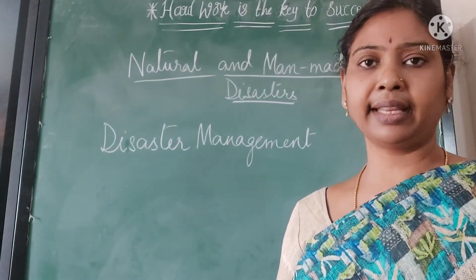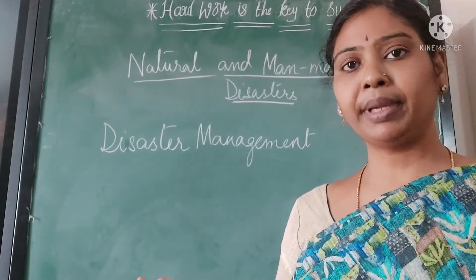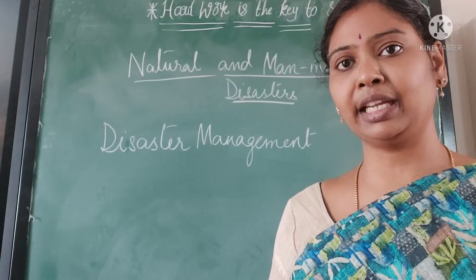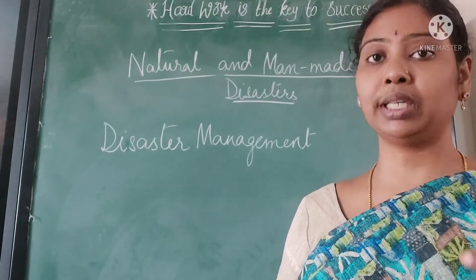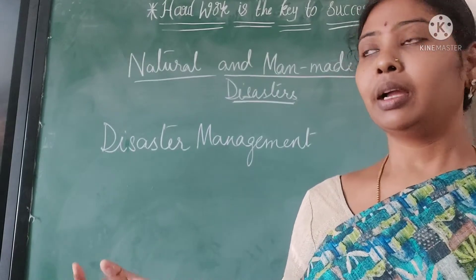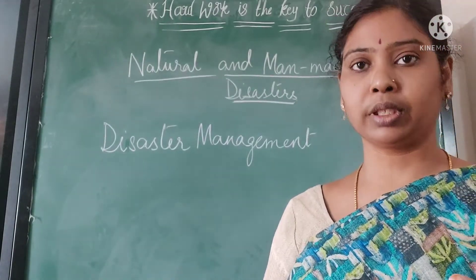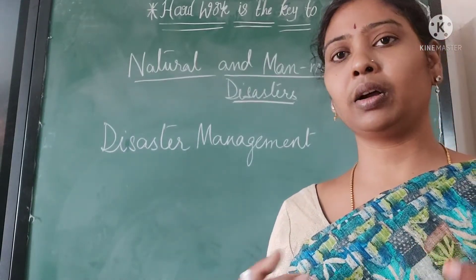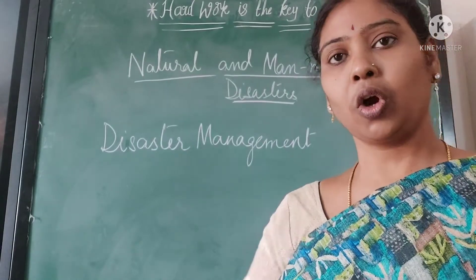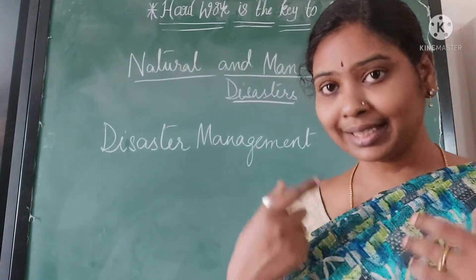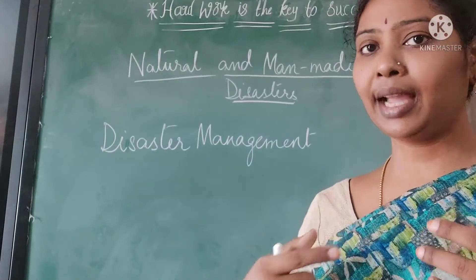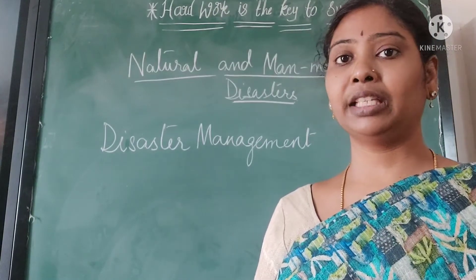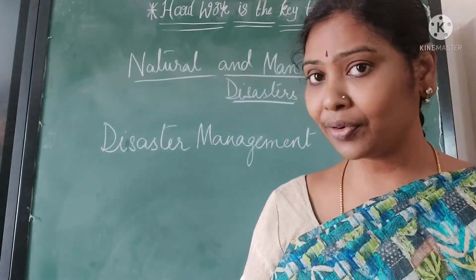Disaster management is when some calamity happens and most of the people come in groups and help each other. That is disaster management — helping each other, individuals or groups. Some voluntary groups will be there, or some government corporations will be there. So all these will be helping. When we are in need, we help each other — that is disaster management.